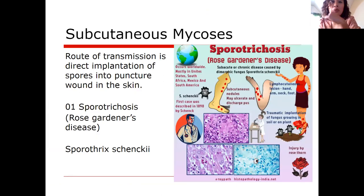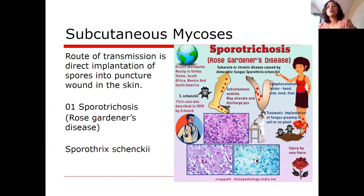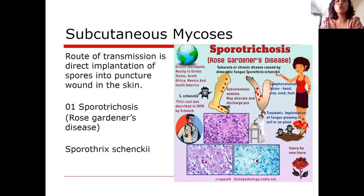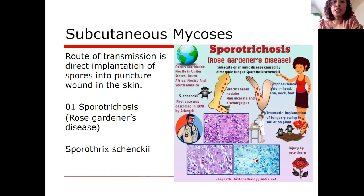For subcutaneous mycosis, the most well-known is sporotrichosis or rose gardener's disease, caused by Sporothrix schenckii. This organism was found on the thorns of roses, so when pricked — traumatic implantation of the thorn — if there is Sporothrix schenckii present, infection occurs. It is mostly affecting rose gardeners, hence the name. It occurs worldwide — in the US, South America, Mexico, and South Africa. The first case was described in 1898 by Dr. Schenck, hence the name Sporothrix schenckii.